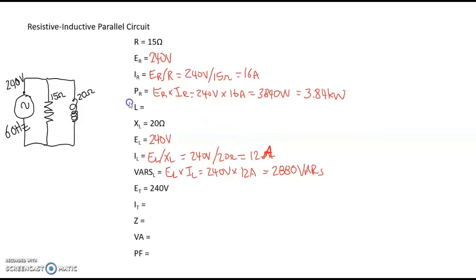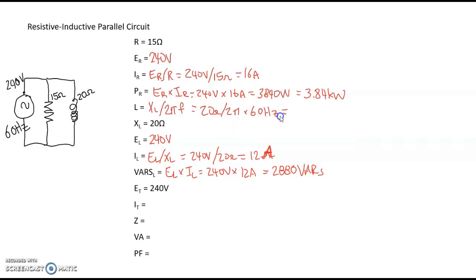Jumping back to calculate the inductance of the inductor: we know the formula for inductive reactance is 2πfL. Solving for inductance algebraically, inductance equals inductive reactance divided by 2πf, which is 20 ohms divided by 2 times pi times 60 hertz. The inductance is 0.0531 henrys, or 53.1 millihenrys.